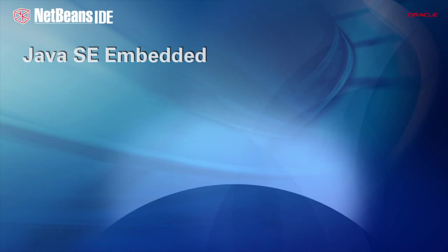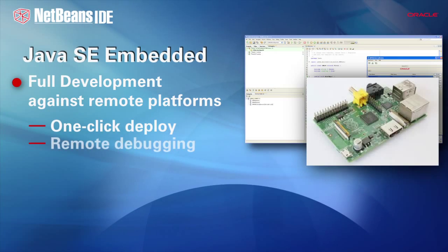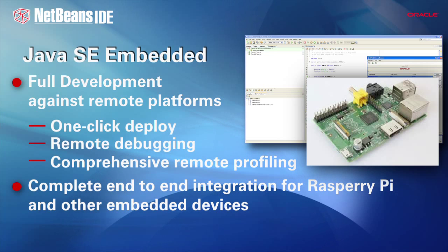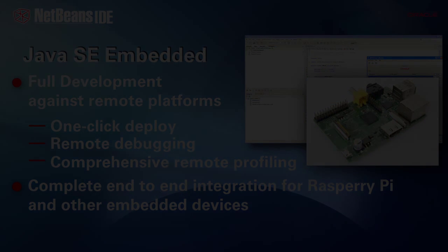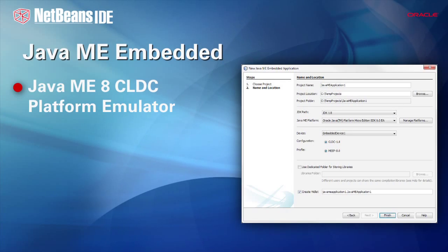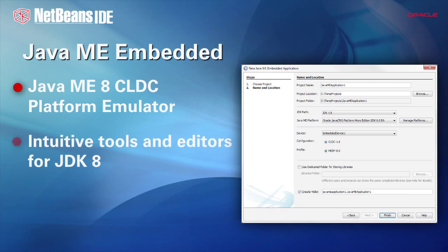For the first time, the IDE lets you develop and deploy applications for embedded devices such as the Raspberry Pi, while letting you debug and profile them remotely. With the new Java ME embedded tools and the IDE, you can code to the latest specifications while using JDK 8.